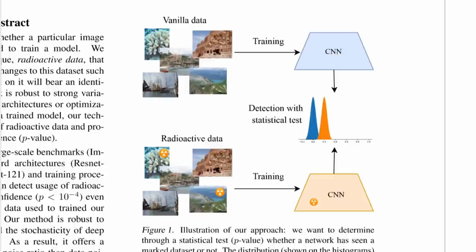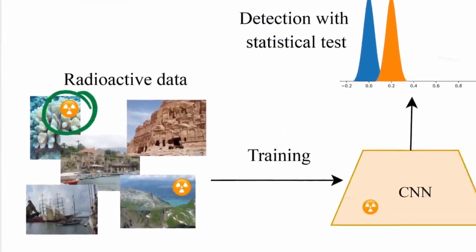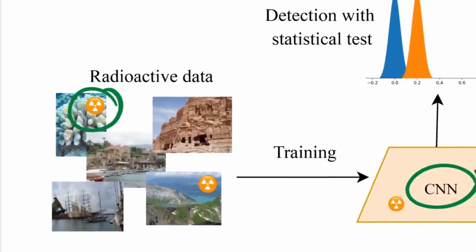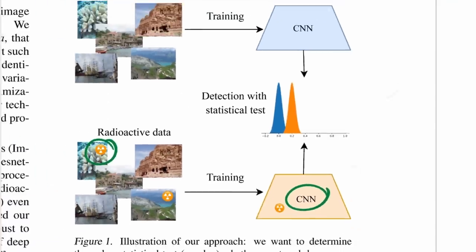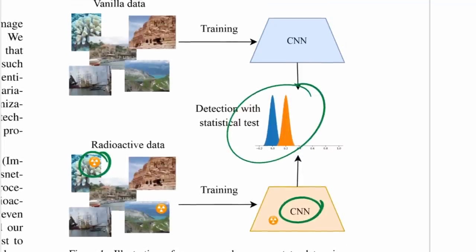In essence, it works like this. If you suspect someone else is training on your data, or if you just have a dataset you want to protect, what you do is mark it — a radioactive mark. You just distort your images a little bit. Then when someone else trains a convolutional neural network on that data — and not all of the data needs to be marked, they can go as little as 1% or 2% — from the output of that network or by inspecting the network itself, you can test whether it was trained on your radioactively labeled data.